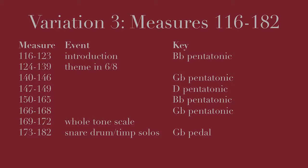Variation 3, the Allegro Cambrio, goes to B-flat pentatonic and then moves through a number of pentatonic shifts: measure 140 in G-flat, measure 147 in D, measure 150 back to B-flat pentatonic, measure 166 in G-flat pentatonic, and then in measure 168, a whole tone scale descending to a G-flat pedal.